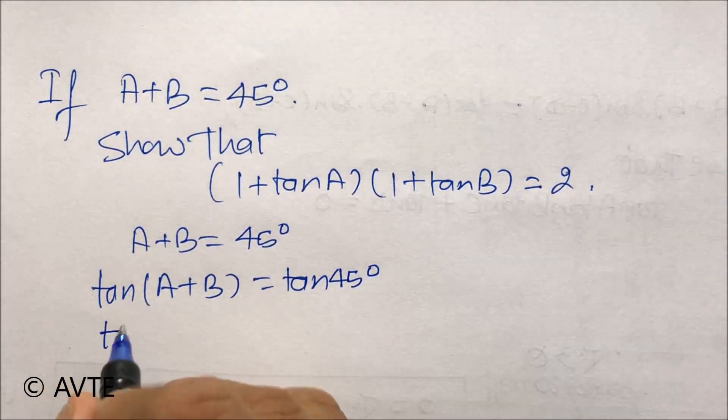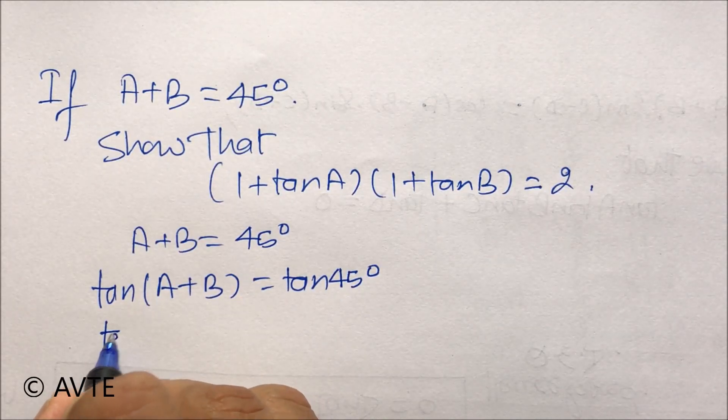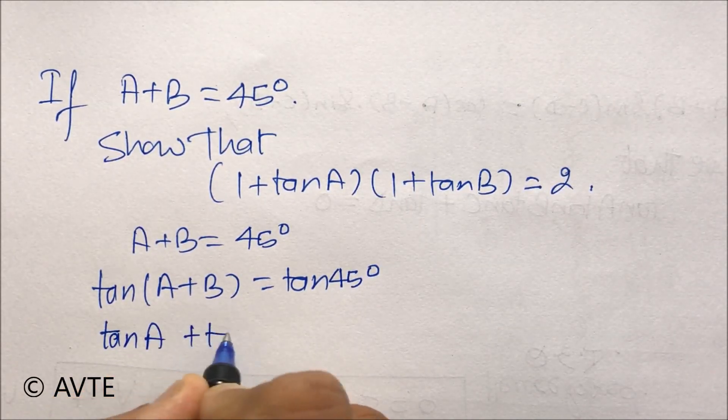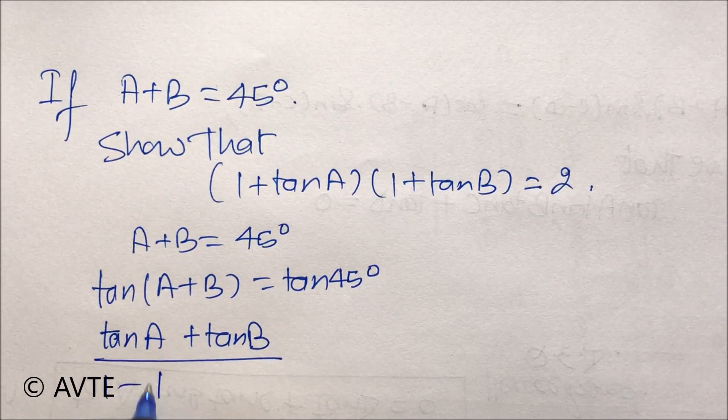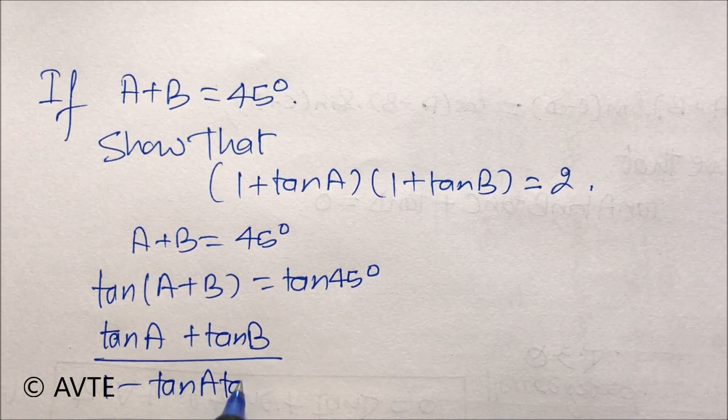We apply tan(A + B), which is the addition formula: tan A + tan B upon 1 - tan A tan B.